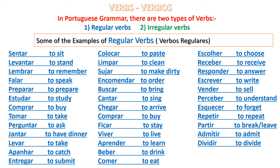Number 1: the verbs that end with the letter AR. Number 2: the verbs that end with the letter ER. Number 3: the verbs that end with the letter IR.